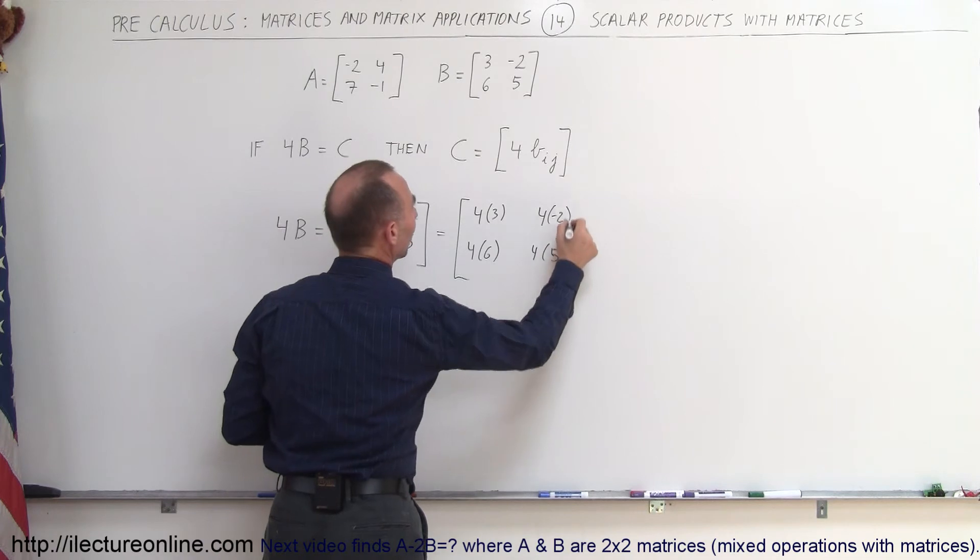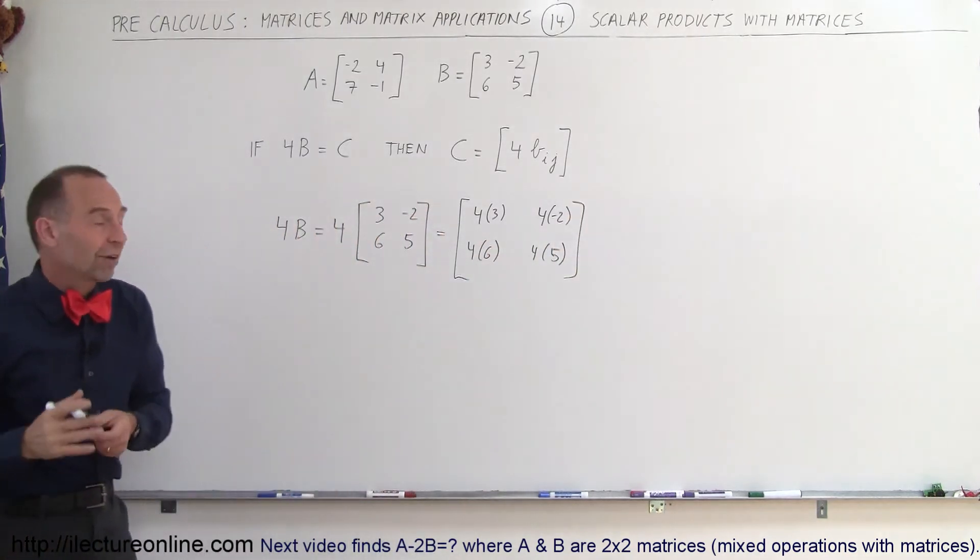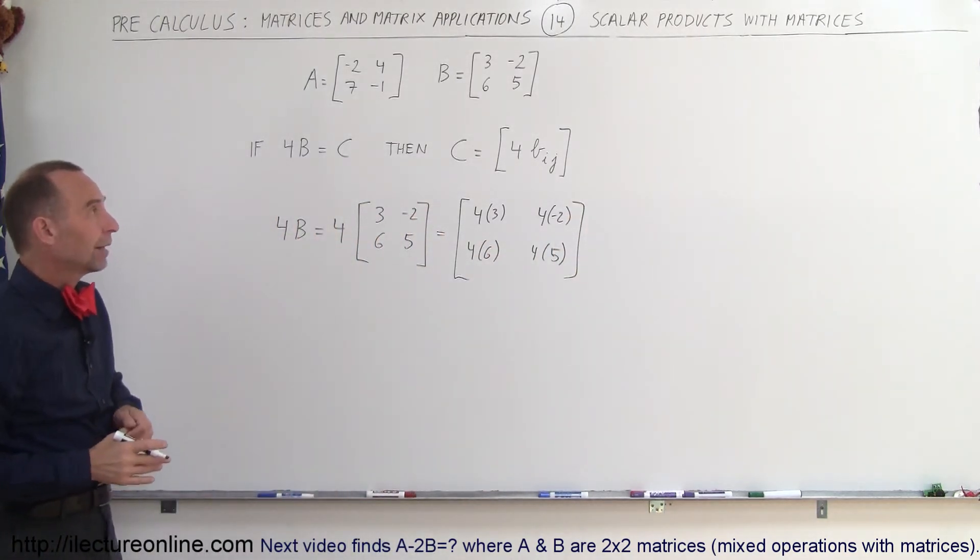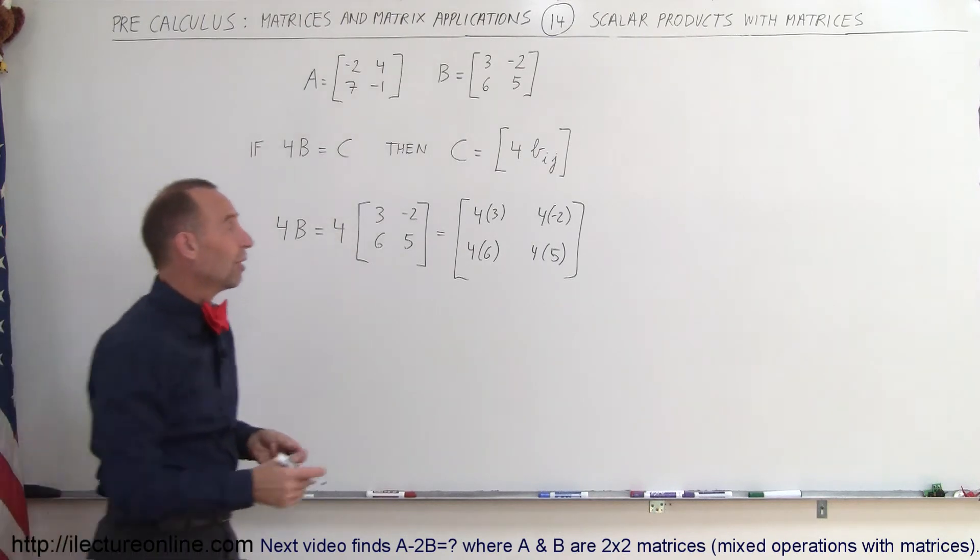In other words, we take each element of B and we simply multiply each element by that factor 4, by that scalar, and therefore we get the following results.